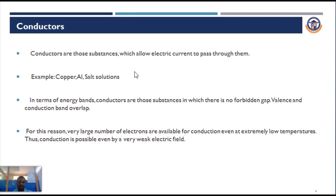Next, we move on to conductors. A conductor is a substance which passes electricity freely. Examples include copper, aluminum, and electrolyte solutions. In terms of energy band theory, the valence band and the conduction band overlap, meaning there is no forbidden gap. For this reason, a very large number of electrons are available for conduction even at extremely low temperatures, and conduction is possible even under a very weak electric field.